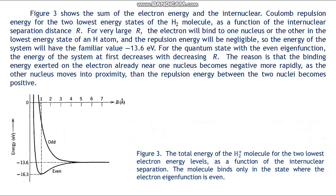The reason is that the binding energy exerted on the electron already near one nucleus becomes more negative more rapidly as the other nucleus moves into proximity than the repulsion energy between the two nuclei becomes positive. As the internuclear separation continues to decrease, the energy passes through a minimum and then begins to increase rapidly. This happens because the electron binding energy when the nuclei overlap can become no more negative than −2² × 13.6 eV = −54.4 eV, the ground state energy of singly ionized helium, whereas the internuclear repulsion increases without limit. For the even eigenfunction case, the molecule is stable, bound by a rudimentary covalent bond, at equilibrium with r approximately equal to 1.1 angstroms.